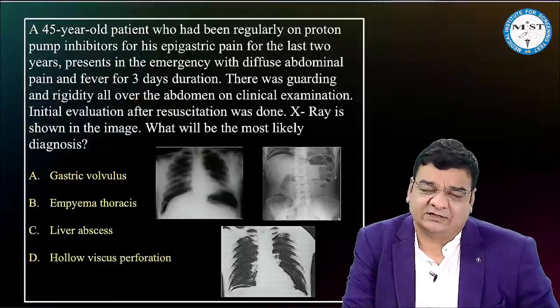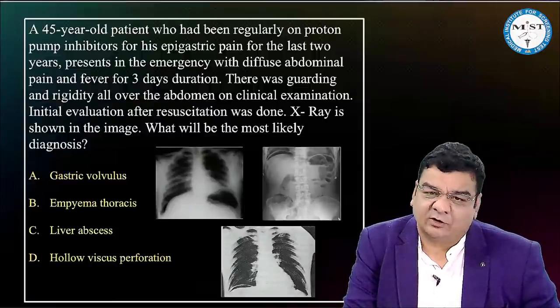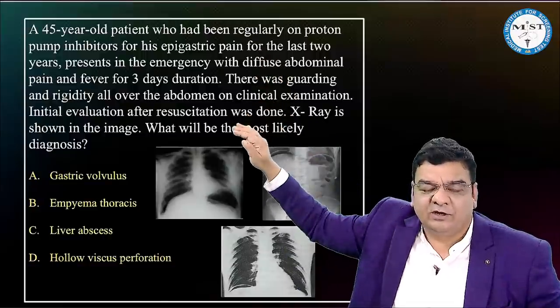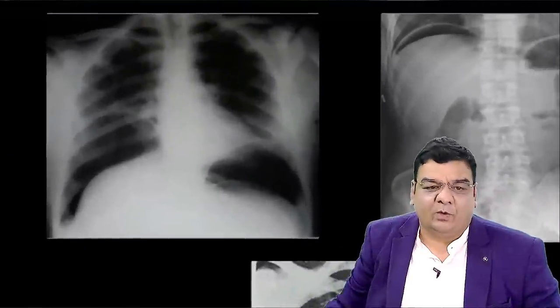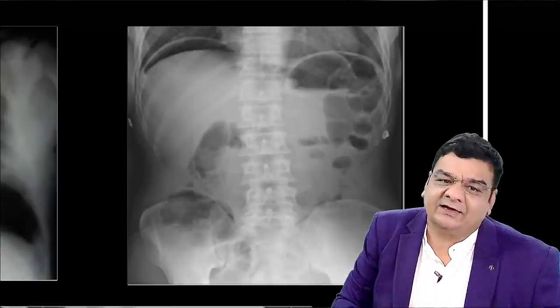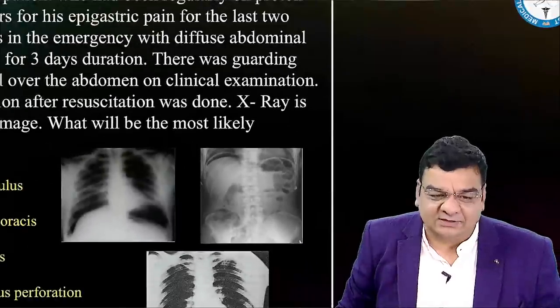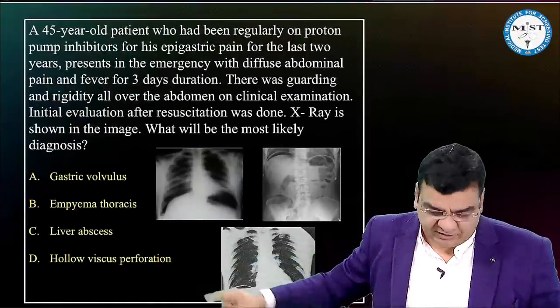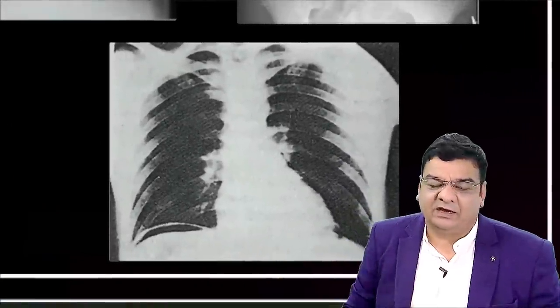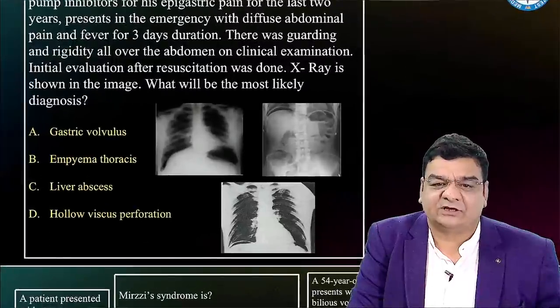The pneumoperitoneum X-ray and intestinal obstruction X-ray are also important. There will be a clinical situation with an X-ray showing gas under the diaphragm — this is pneumoperitoneum suggestive of hollow viscus perforation in the abdomen. This image was specifically asked in a recent INICT exam with the answer being hollow viscus perforation. Be careful about these X-rays and do not leave them before your exam.